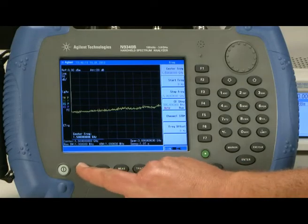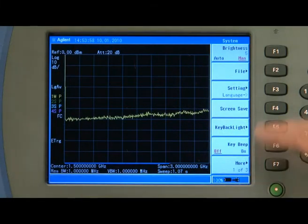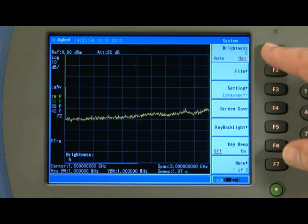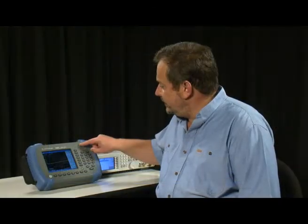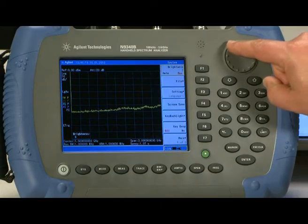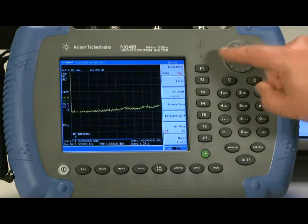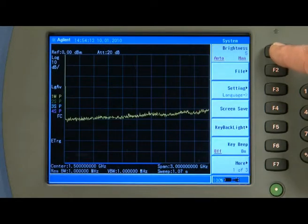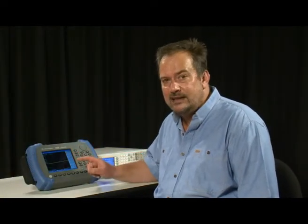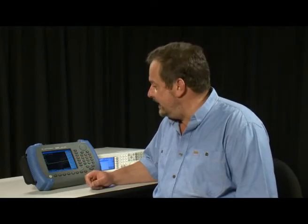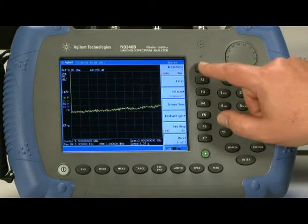If I press the system button you can see here there is a button called brightness. If I press that you can see it is set to manual and level of 5. I can turn the knob and make the screen brighter or dimmer. If I press the button again it changes the brightness setting to auto. Now the light sensor is active and the screen brightness will be automatically adjusted depending on the ambient lighting conditions. I will set that back to manual for now.